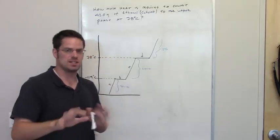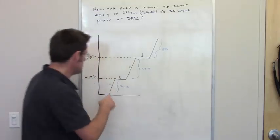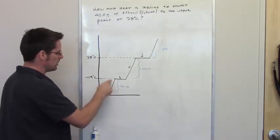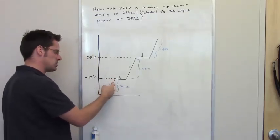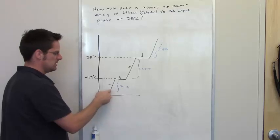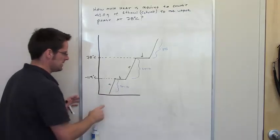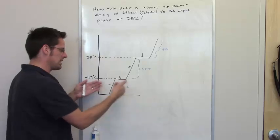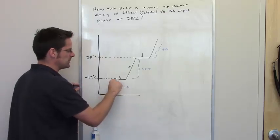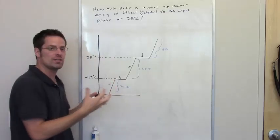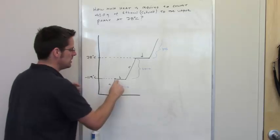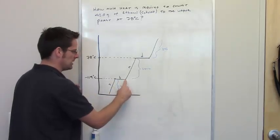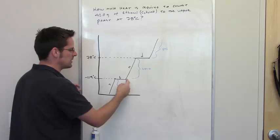At standard pressure — one atmosphere — anywhere below negative 114 degrees Celsius, ethanol will be solid. As soon as it hits negative 114 and you start adding more heat, the temperature does not change until all of that ethanol has been converted from a solid to a liquid. At this point it's now liquid, and you continue increasing the temperature.